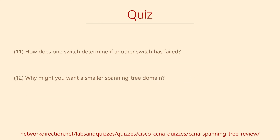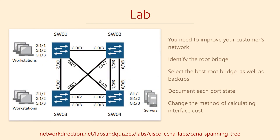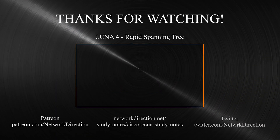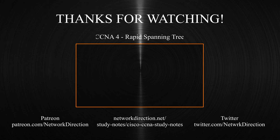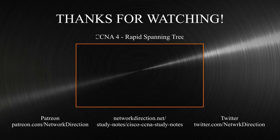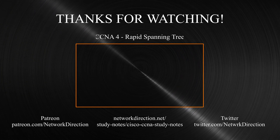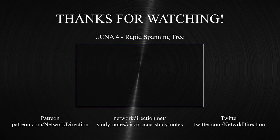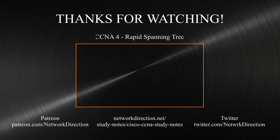Here are two final questions to consider — pay special attention to question 12. The lab focuses on the original Spanning Tree, covering improving the Spanning Tree topology, including selecting the best root bridge, selecting backup root bridges, documenting the topology, and changing the cost calculation. Because Spanning Tree is such an old protocol, the original version doesn't work so well in modern networks. Over the years there have been a few improvements, the most common being Rapid Spanning Tree, or RSTP. Head over to the next video where we'll look at how RSTP improves on the original Spanning Tree.